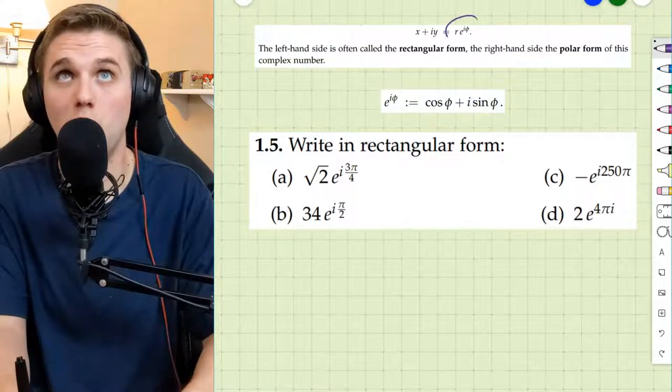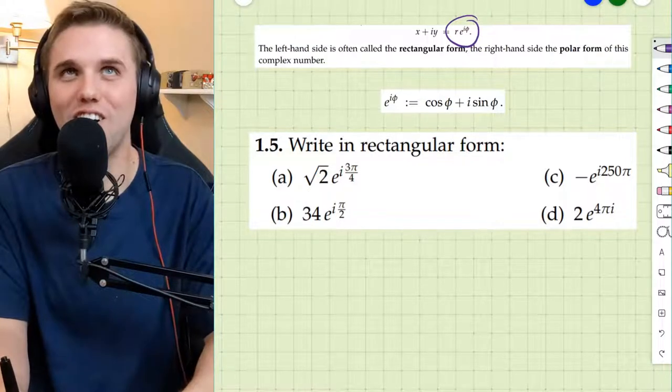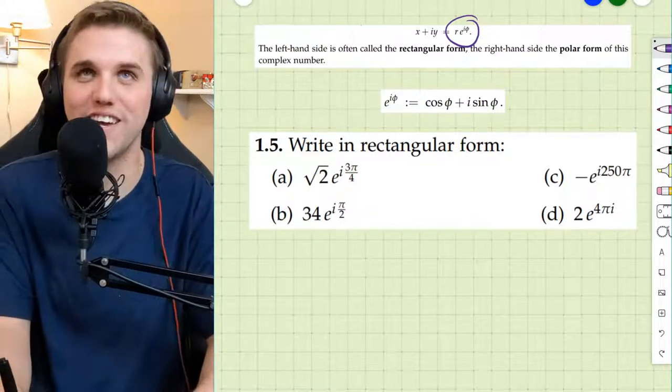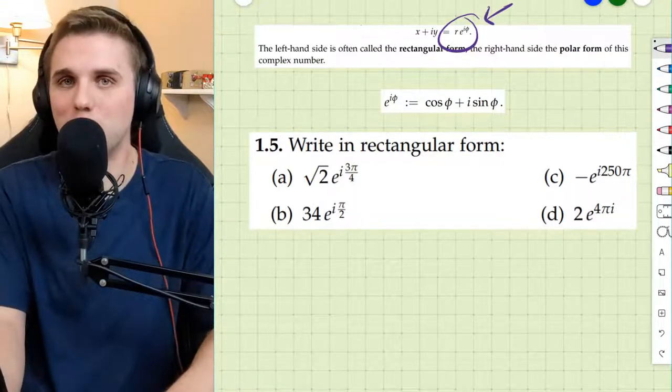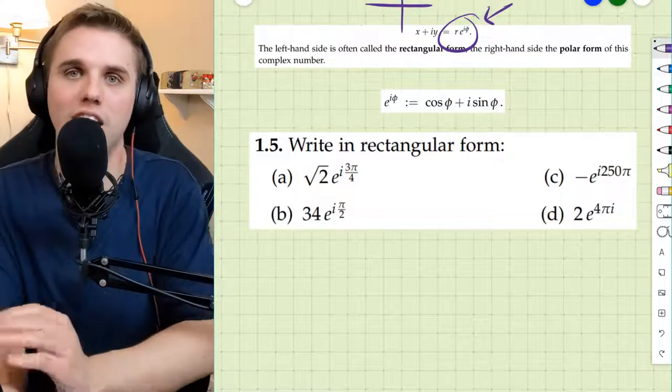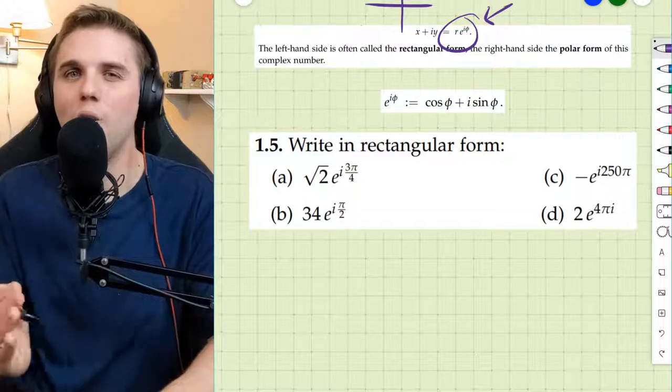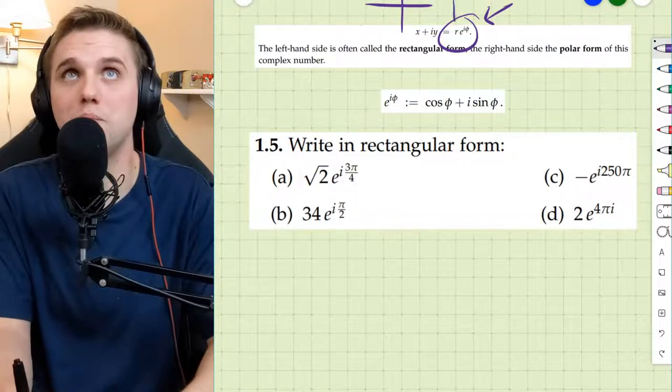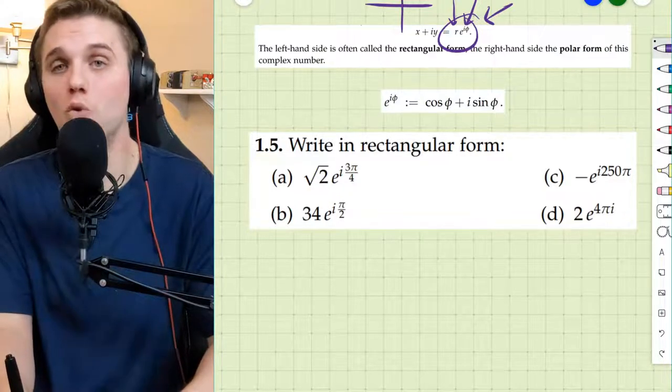Now in polar form, there are two letters here that actually matter, r and phi, which I use theta. Now polar form has a unique interpretation where instead of going right and up or left and down, you go out and around. So r represents how much out you go and phi represents how much around you go.